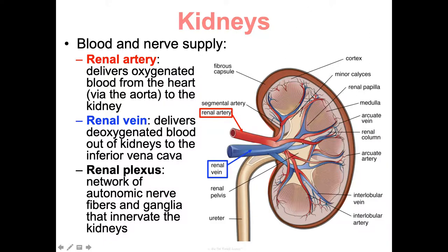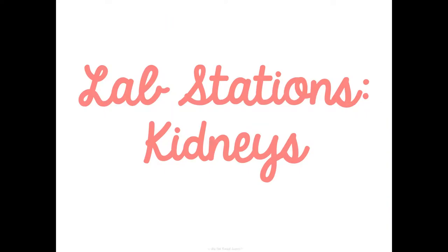The artery and veins branch into smaller and smaller components: arteries feed into smaller arteries, which feed into arterioles, which feed into capillaries forming capillary beds. Those capillary beds branch into venules, which branch into bigger veins, all leading back to the renal vein — a review of blood vessel organization from unit four.